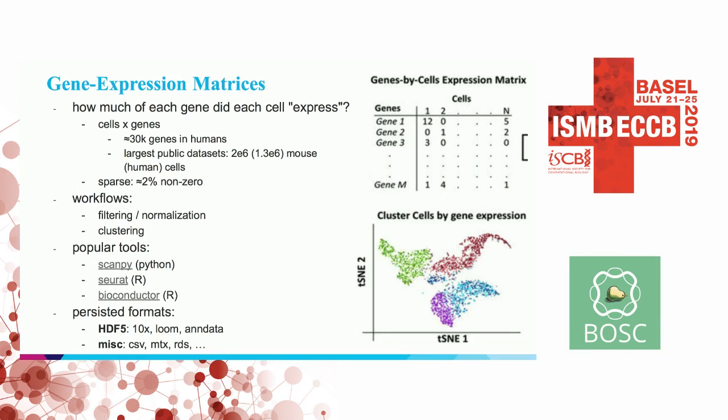When I talk about single-cell data, I'm basically starting from the gene expression matrix, which is a giant sparse matrix of cells by genes with just a number indicating how much each cell in a population was expressing a given gene. We have increasingly large datasets of this form. There's an upstream processing part involving going from reads to these matrices that I'm assuming is standard — I'm not covering that here.